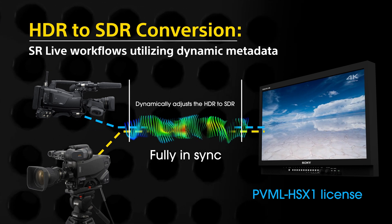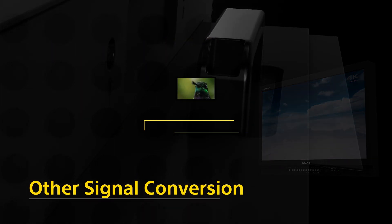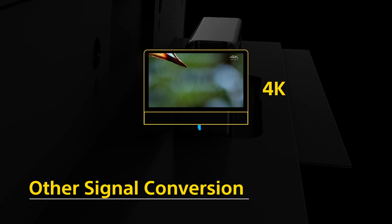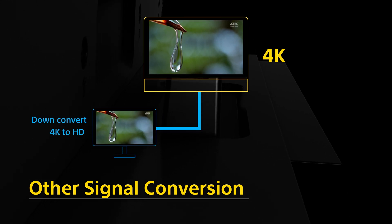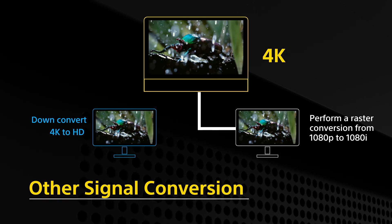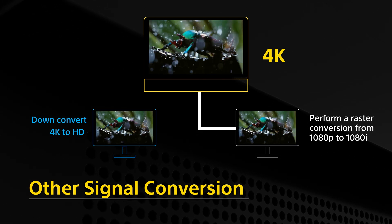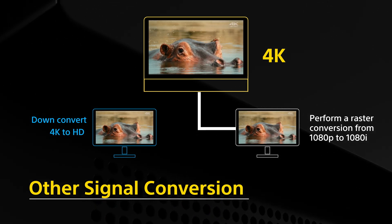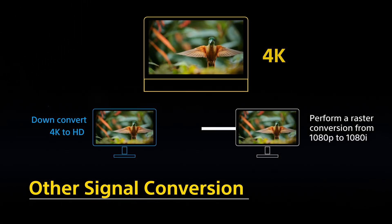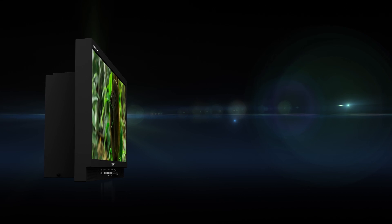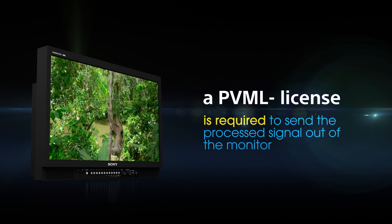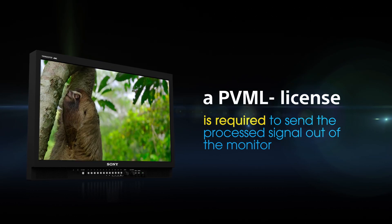We refer to this conversion as dynamic as it's fully in sync with the creative decisions and camera adjustments made by the camera operators during the production. For productions shooting in 4K that require an HD signal, the license can down-convert 4K to HD and also perform a raster conversion from 1080p to 1080i for in-house distribution for monitoring purposes. These signal processing features can be used with or without HDR to SDR conversion. Whether you're utilizing all of the conversion features or simply adding a look LUT, a PVML license is required to send the processed signal out of the monitor.